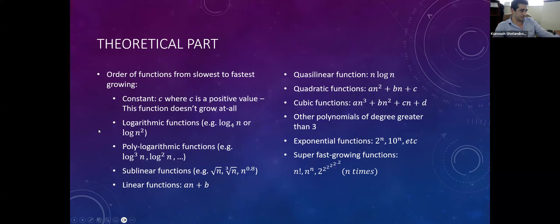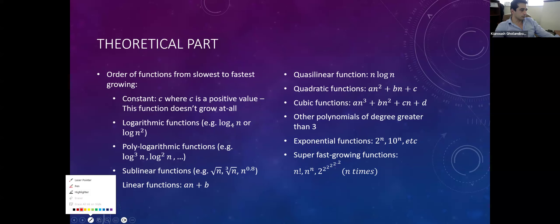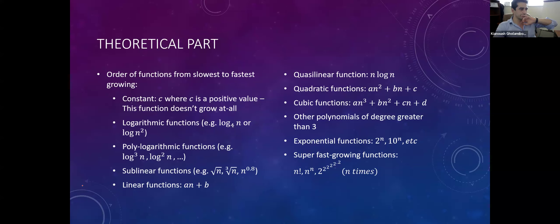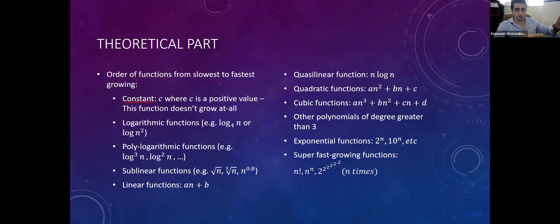This is a great list — you can add to it and make it longer, but most cases will be one of these items. The first one is constant time: that's the slowest growing function. It doesn't even grow — it's a constant, so no matter how big the problem, the number of operations the computer has to run is constant.